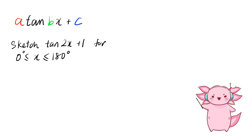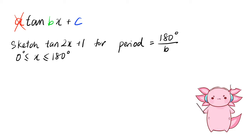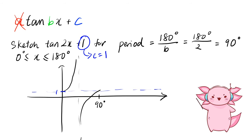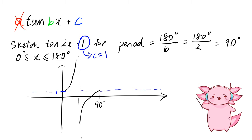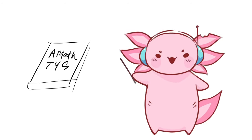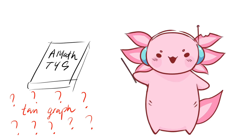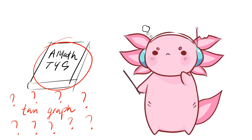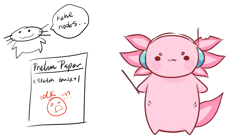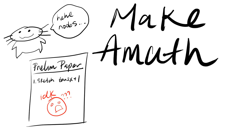For tangent graphs, the form is a·tan(bx) + c, but the a value doesn't really affect the shape. The period is 180 ÷ b, so with b = 2 the period is 90 degrees. Draw the center axis at c = 1. The graph has an asymptotic shape where the first part goes up to infinity and the second part comes from negative infinity. For 180 degrees, just copy and paste. Real talk: the tangent graph is technically in the syllabus but has never appeared in the past 10 years — yet all schools love setting it in prelims.